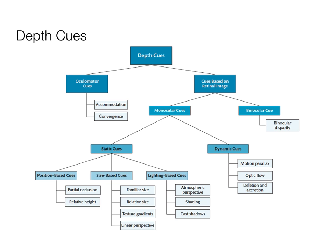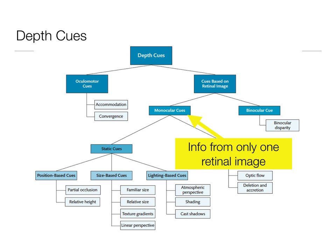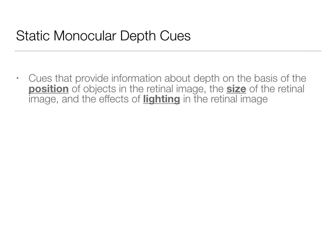As a follow-up, this is what our depth cues are. We've already talked about the ocular motor cues. Now we're talking about the monocular cues — information from only one retinal image. In this lecture, we're going to focus on these static cues, which include position-based cues, size-based cues, and lighting-based cues. Static means these are all things that aren't moving.